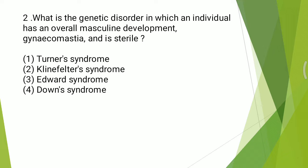Second question: what is the genetic disorder in which an individual has an overall masculine development, gynecomastia, and is sterile? Options: Turner syndrome, Klinefelter syndrome, Edward syndrome, Down syndrome. The answer is Klinefelter syndrome.